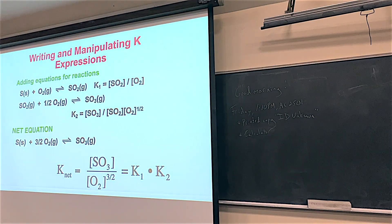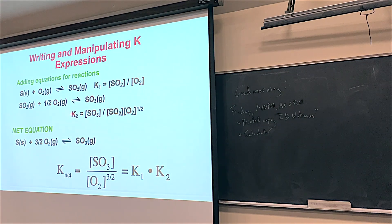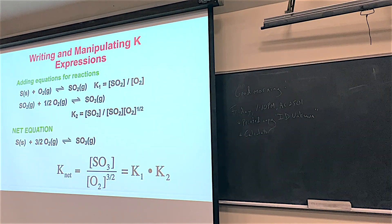As an example, say Clifford has been working on one reaction with a good K value, and Stephanie has been working on another. Aiden wonders what the overall K is — no problem. You can literally multiply those two established K values together to get the overall K. Keep in mind K is temperature-dependent, so in theory all of these would be at the same temperature.